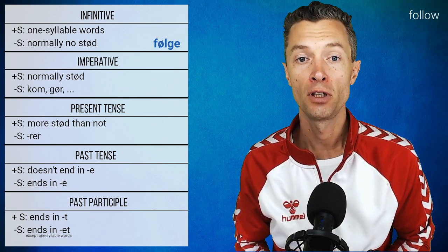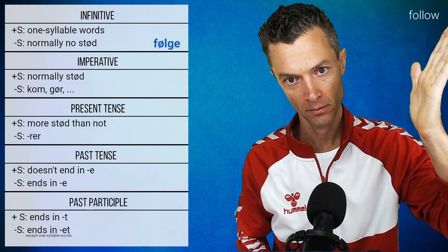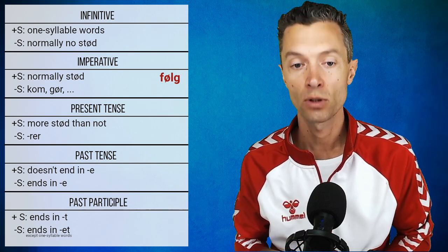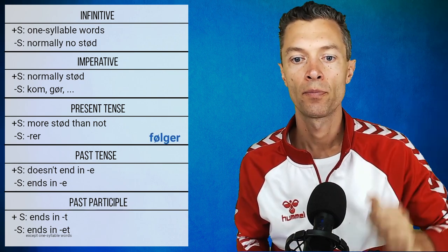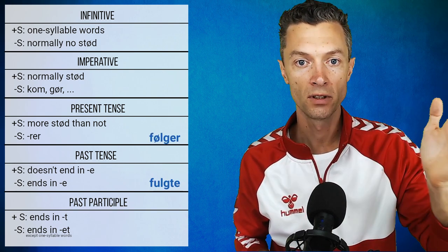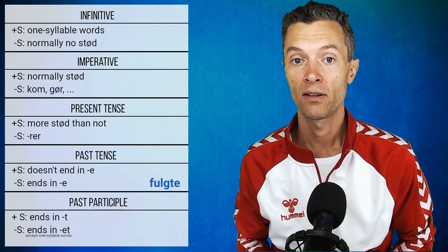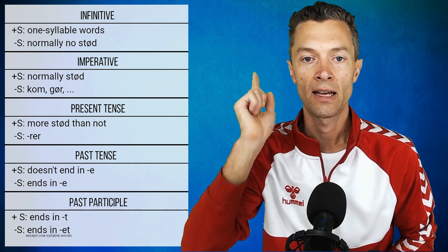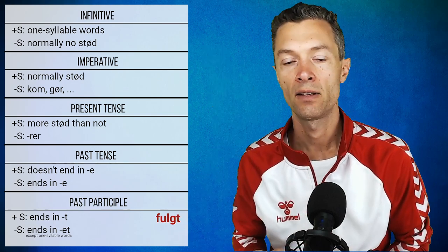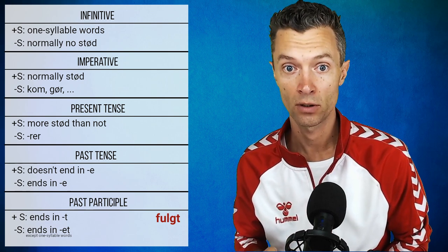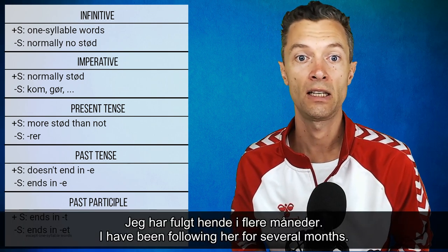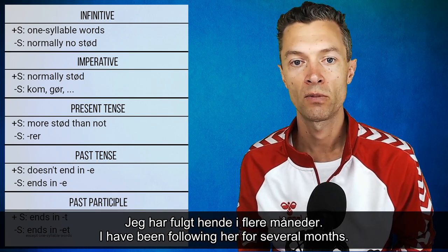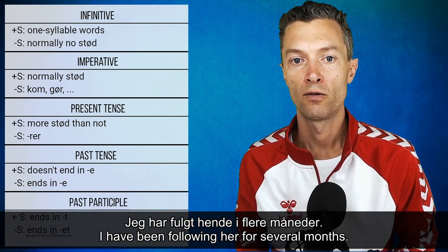Next verb: 'følge'. Infinitive 'følge' — no stød. Imperative 'følg' — stød is possible and we use it. Present tense 'følger'. Past tense 'fulgte' — ends in -e, so no stød. Past participle 'fulgt' — ends in -t not -et, so we have stød. For example: jeg har fulgt ham i flere måneder — you follow somebody on YouTube.